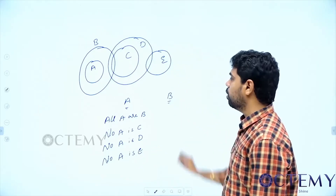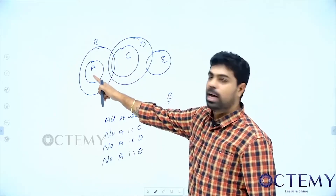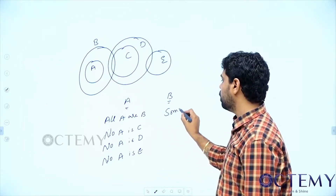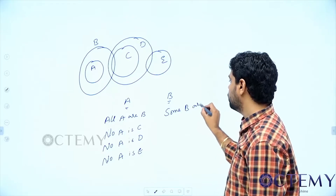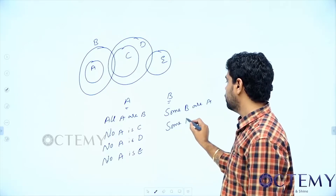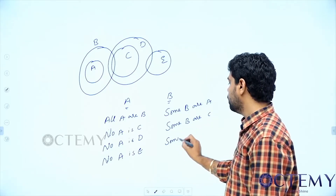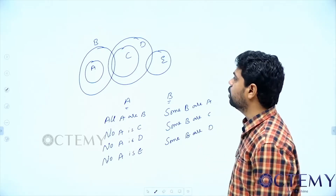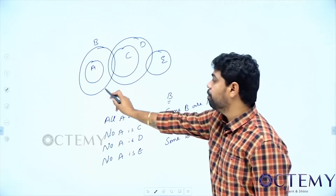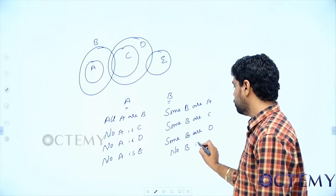Now with respect to B: from B if I see, some B are A — some part of B is A. What about B and C? Some B are C. In the same way, some B are D. Now from B to E: we don't have any relation between B and E, so no B is E.